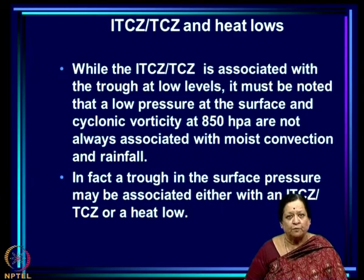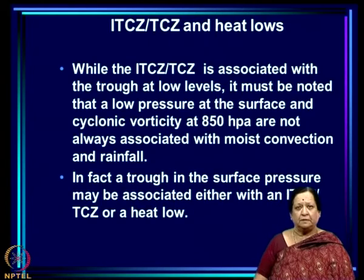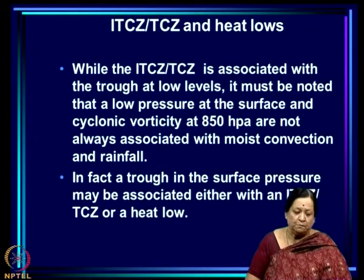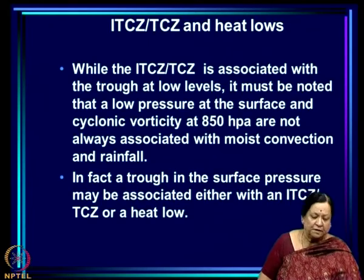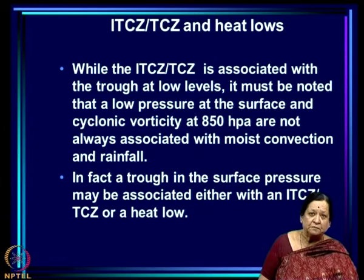The basic system responsible for the monsoon rainfall is the TCZ — the same system responsible for large-scale rainfall over other tropical regions such as the Pacific. However, the amplitude of the seasonal migration is larger over the monsoonal region than over the oceanic region. Since this TCZ occurs over the Indian subcontinent (land), we call it a Continental TCZ or CTCZ, to distinguish it from the more common TCZ observed over the Atlantic and Pacific oceans. A major program of the Indian Climate Research Programme focuses on understanding processes leading to variability of the CTCZ and hence monsoon rainfall variability.